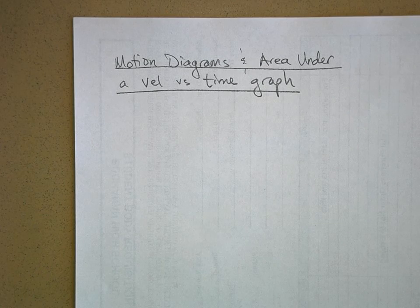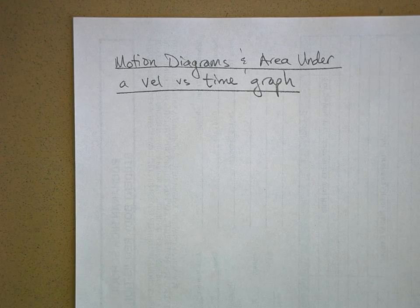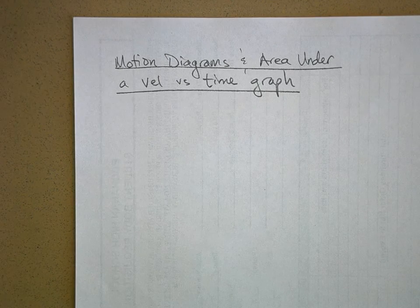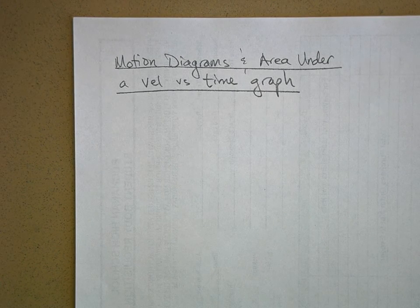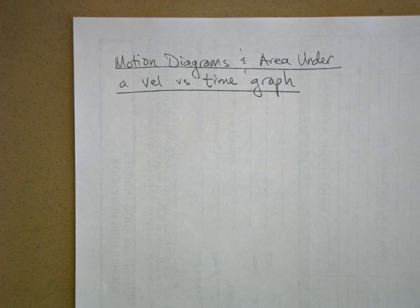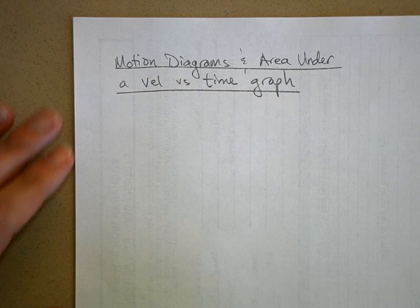We're going to talk about motion diagrams and then we're going to talk about the area underneath the velocity versus time graph. This whole unit we're talking about objects that are moving with constant velocity, and we've already got a couple of ways of representing constant velocity motion, one of which is with the graph.